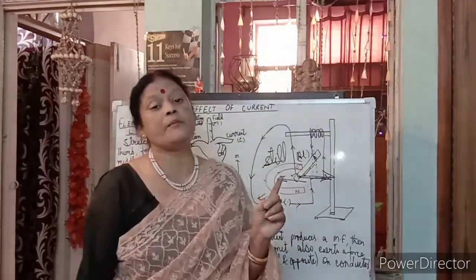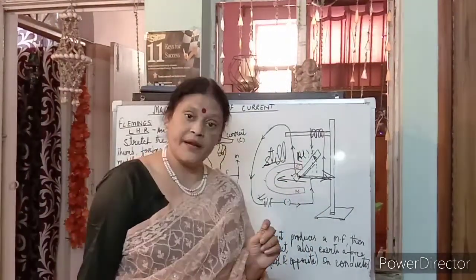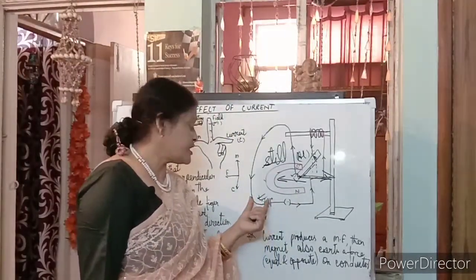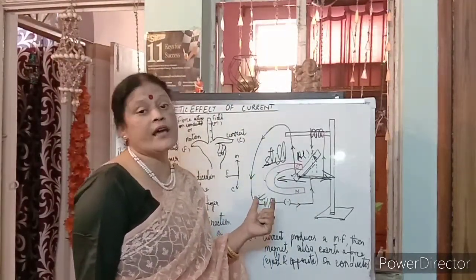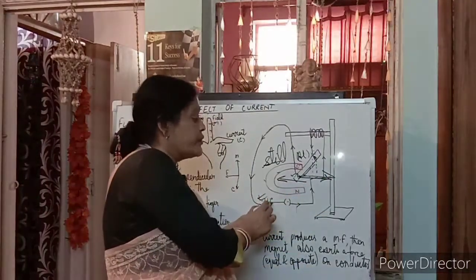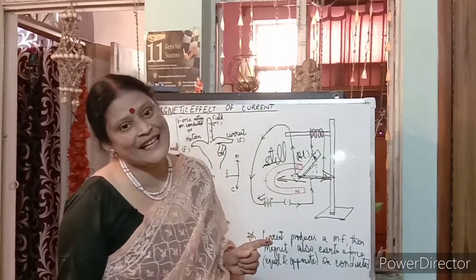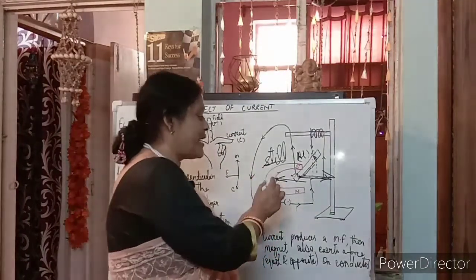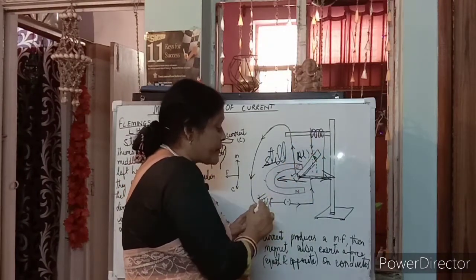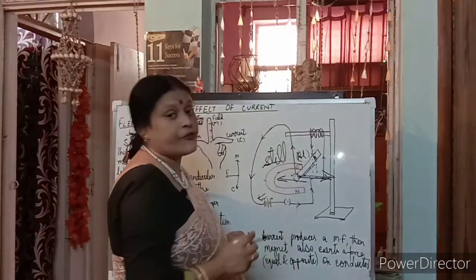These three — force, current, and magnetic field — have to be perpendicular to each other. Now if I increase the battery voltage, suppose from 5 volts to 12 volts, the magnetic force will increase. The magnetic field will become larger because more current flows through the solenoid, so the magnetic force increases.